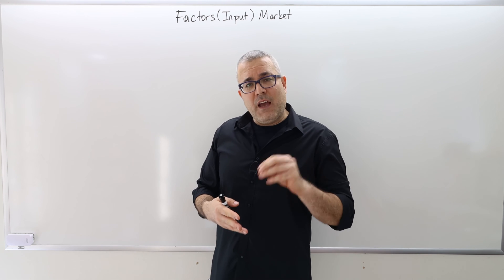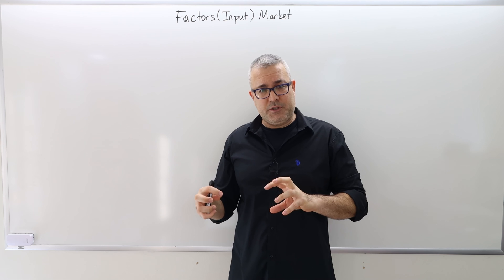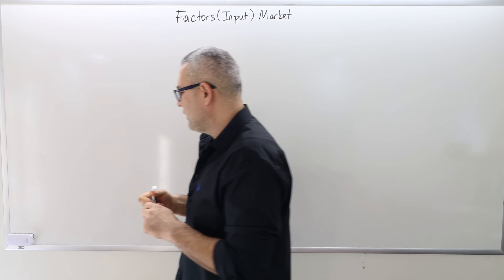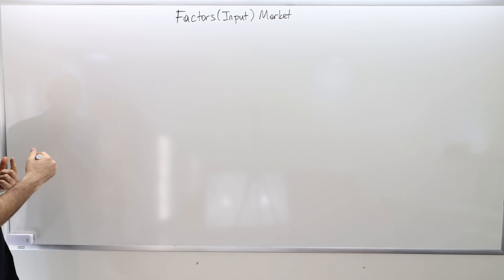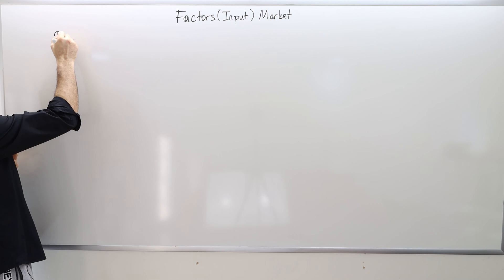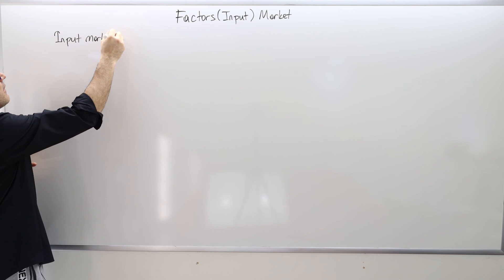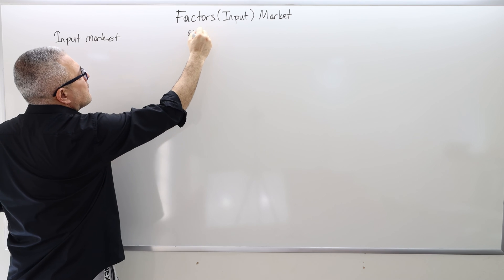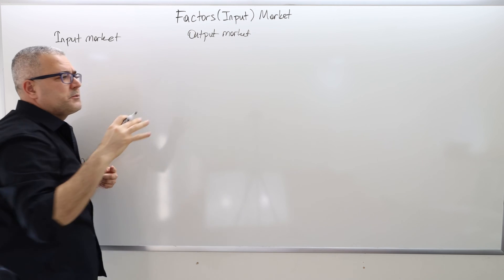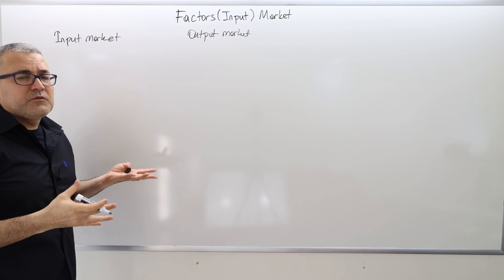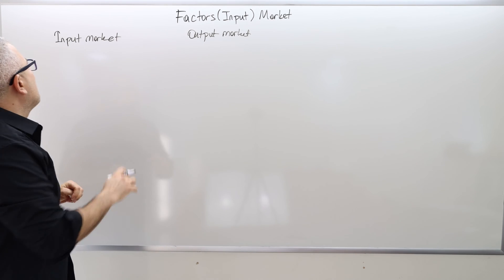So we're bringing the input market into the picture and constructing the optimization problem accordingly, then comparing how the firm's behavior would change relative to the perfectly competitive firm. For that reason, we need several modeling assumptions throughout this chapter.